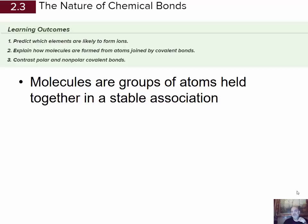Here we're going to focus on chemical bonding. The learning outcomes are to predict which elements are likely to form ions, explain how molecules are formed from atoms joined by covalent bonds, and contrast polar and nonpolar covalent bonds.